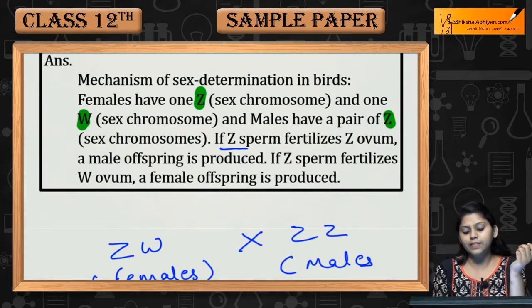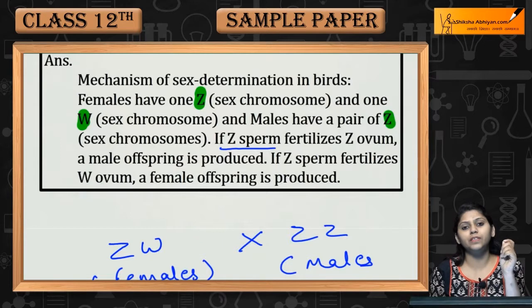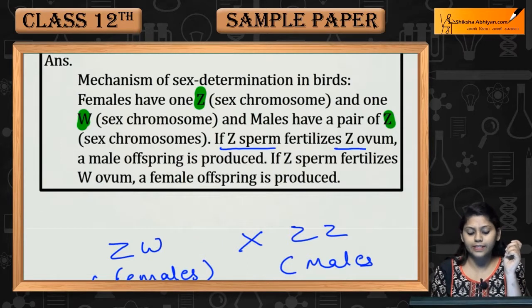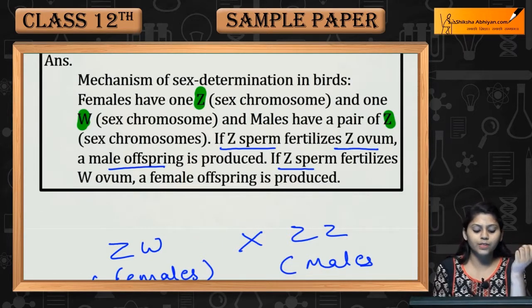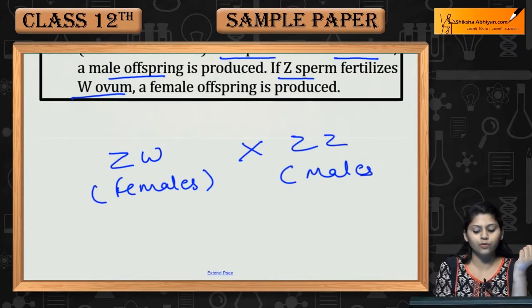If a Z sperm fertilizes a Z ovum, then a male offspring is produced. If Z fertilizes W, then female offspring are produced.